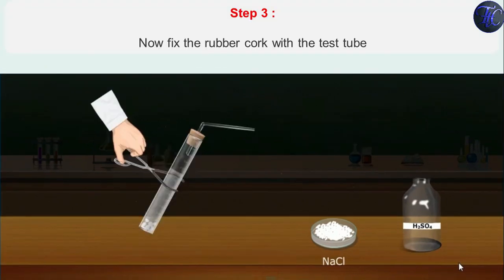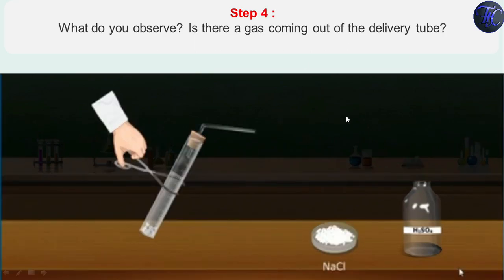Now fix the rubber cork in the test tube. What do you observe? Is there any gas coming out of this test tube? Yes. Here you can see the gas which is coming out of this test tube and that gas is HCl gas.